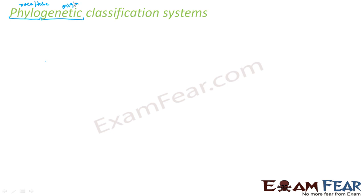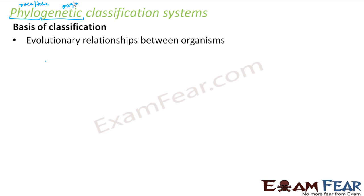So what is the phylogenetic classification system? Basically, phylogeny is the evolutionary history of taxonomic groups. When we talk about the origin of different organisms, that actually helps us to classify them. The basis of classification here is evolutionary relationships between organisms. How do we conclude the evolutionary relationship between organisms? By looking at the similarities and dissimilarities between different organisms, we can conclude their evolutionary relationship, and this is the basis of the phylogenetic classification system.